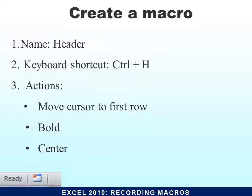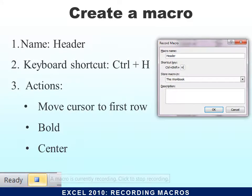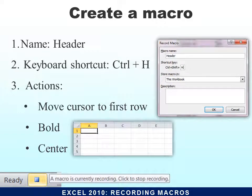Let's say we wanted to create a macro called 'header,' give it a keyboard shortcut of Control-H, and have it move the cursor to the first row to bold and center. We'd come down and click Record Macro, give it the name 'header' — it's not used by anything else like 'bold' which is taken. There are no spaces, no symbols, so it will work. We want it as capital H because Control-H is already taken — that's Replace. So we make it capital and store it just in this workbook. We can also add a description to identify it later.